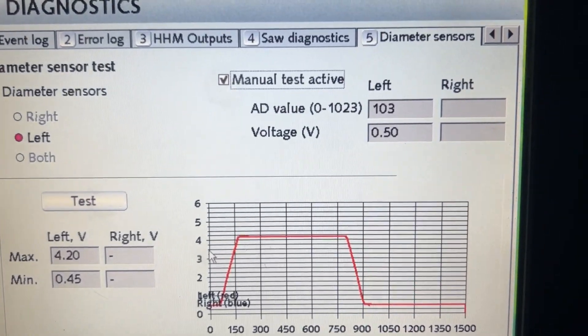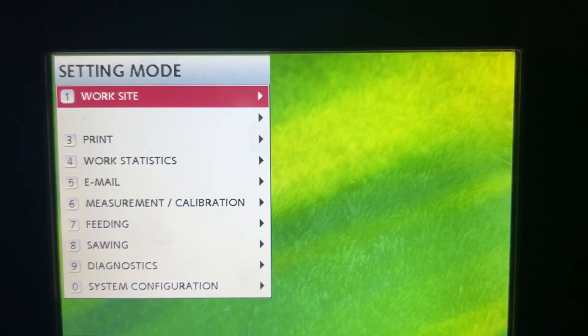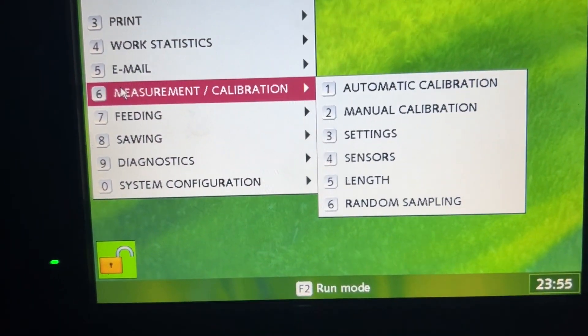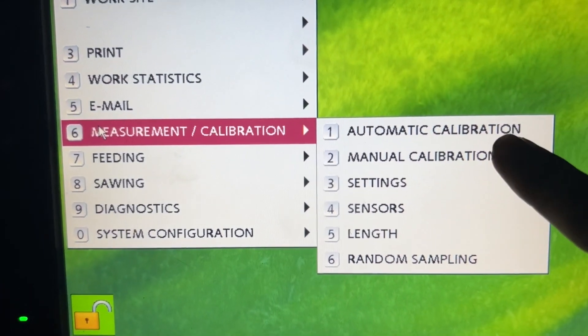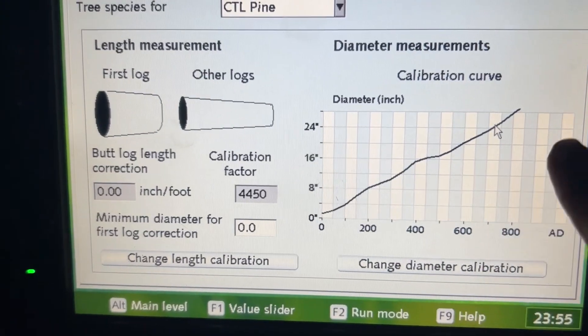So we are going to rebuild a diameter graph. That is in your measurement and calibration. You are going to come into manual calibration. You can see this is my diameter graph right here.